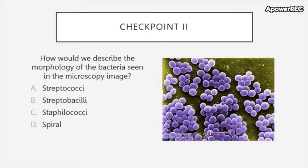Checkpoint two: how would we describe the morphology of the bacteria seen in the microscopy image? A) streptococci, B) streptobacilli, C) staphylococci, or D) spiral?